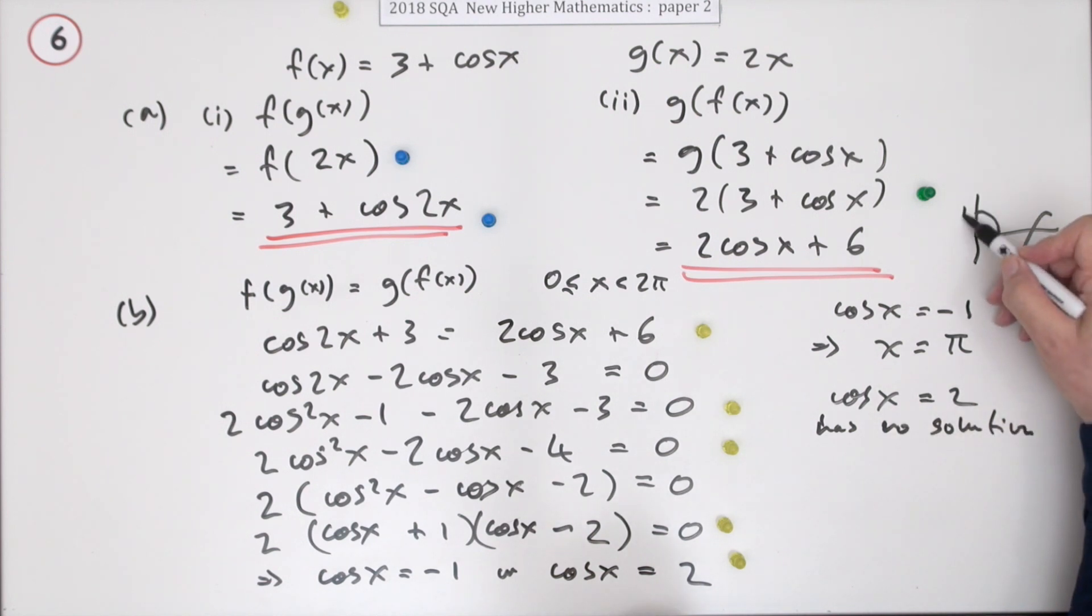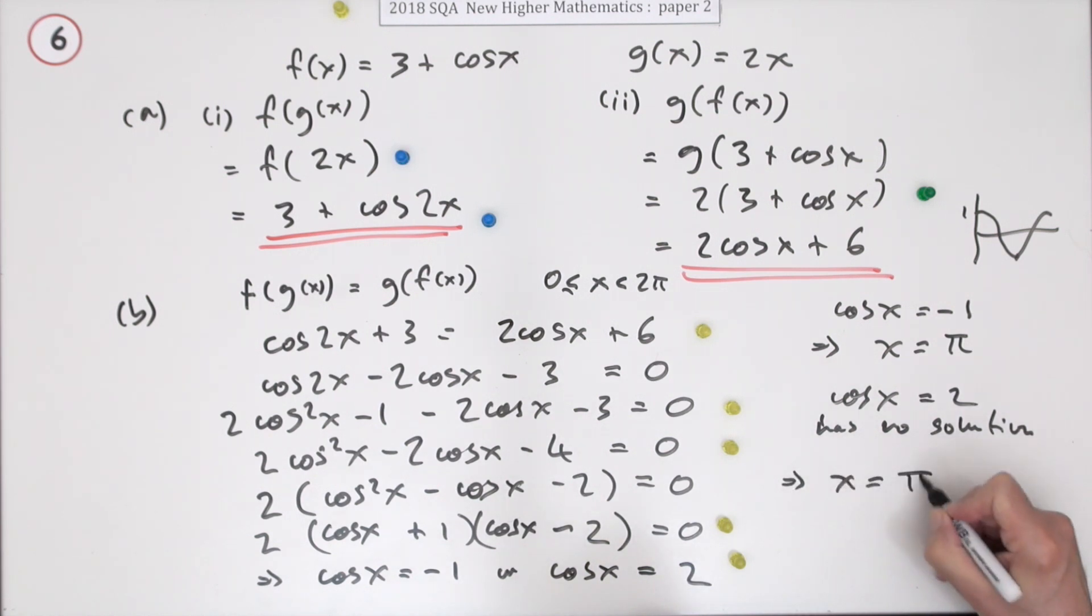Cos of x equals 2 has no solutions because the cosine can only get as high as 1. There's no value of x that can take you up to 2. Which means the final solution to the whole question is x equals π only, and that's the final mark.